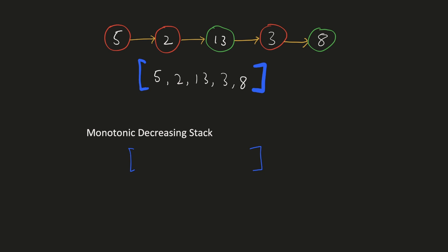Let's see with the help of an example. For the first number 5, there are no numbers in the stack, hence we'll append it. For the next number 2, the top element of the stack is not smaller than it, hence we'll not remove it. Now we'll add 2 to the stack. For number 13, 2 and 5 are smaller than it, hence we'll pop them. Now we'll add 13 to our stack.